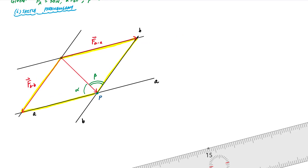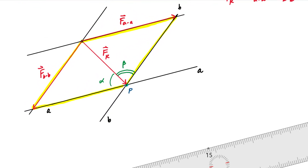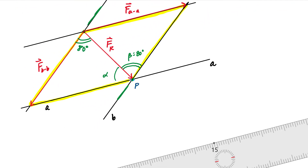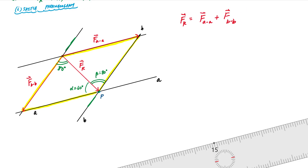In terms of a mathematical relationship, FR equals F_AA plus F_BB — that's my vector addition. I pick the lower left triangle to focus on. From the idea of parallel lines, I know this line and this line are parallel, being intersected by the resultant FR. This tells me that this angle here is also beta, which is 80 degrees, and I already know alpha is 60 degrees.